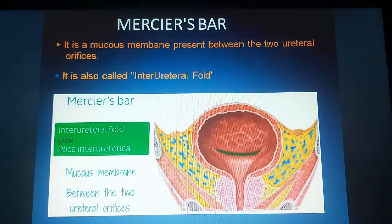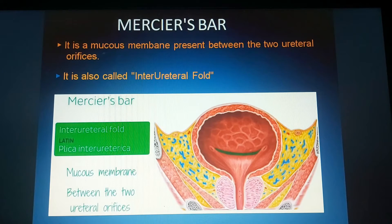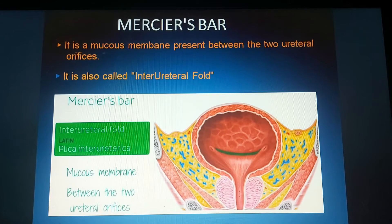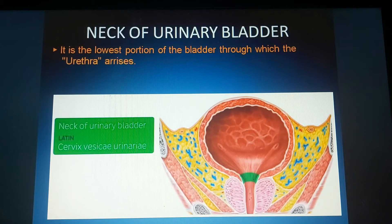Mercias bar is a mucous membrane fold present in between the right and left ureteral orifices. It is otherwise also called the inter-ureteral fold.